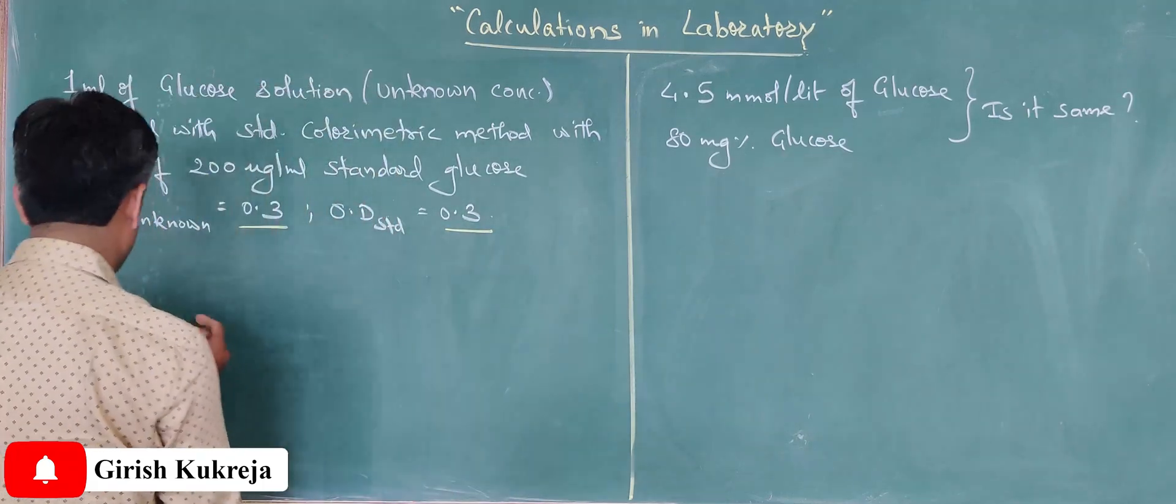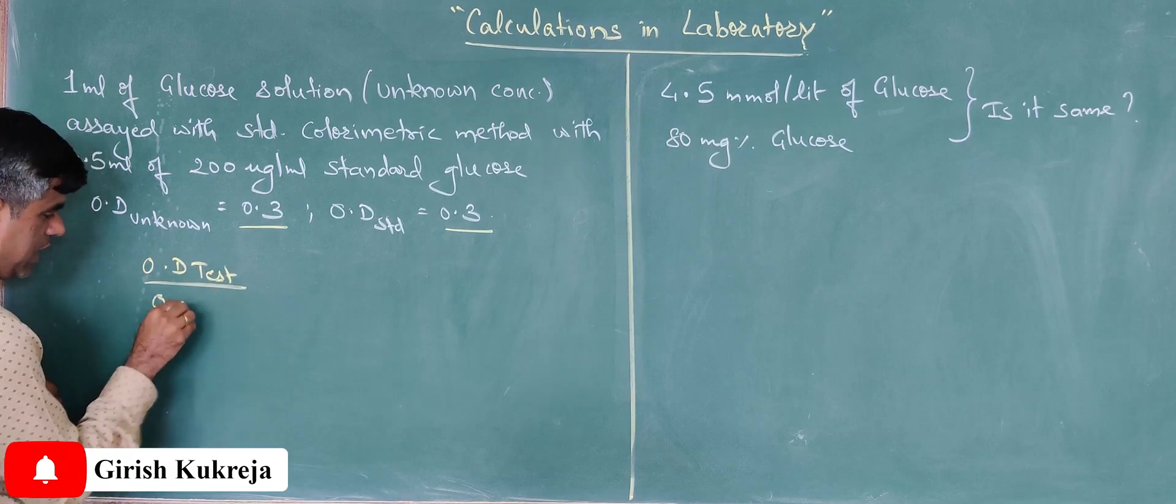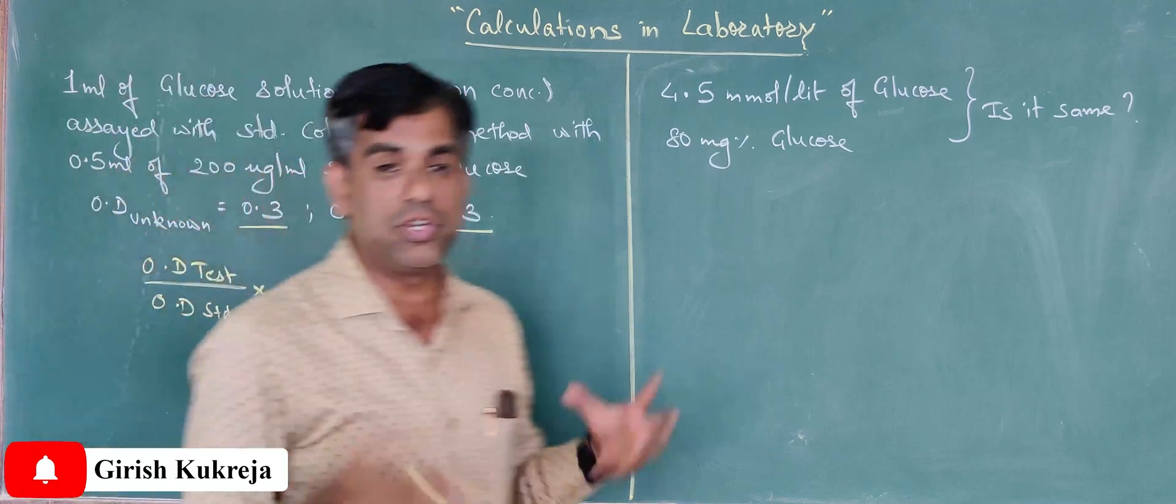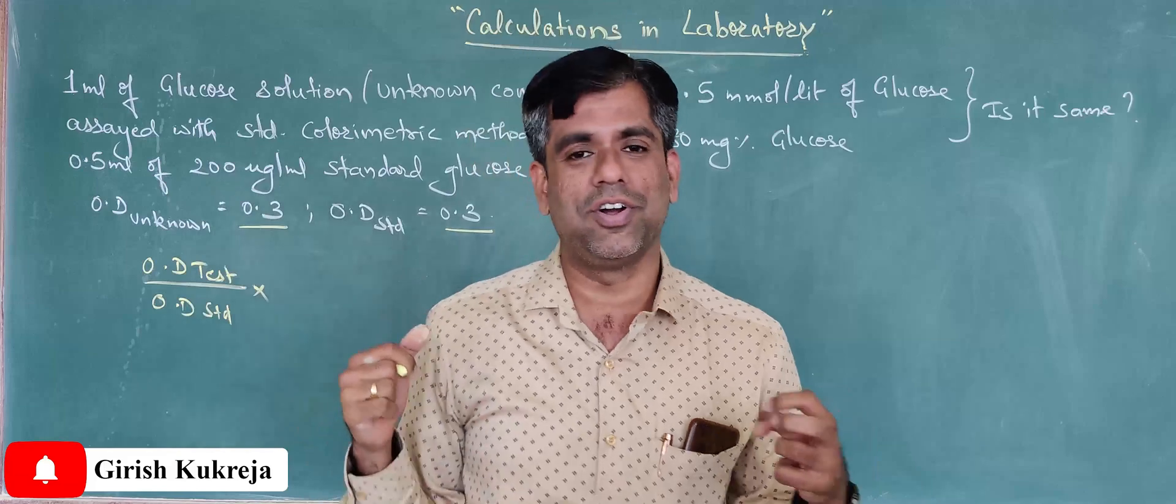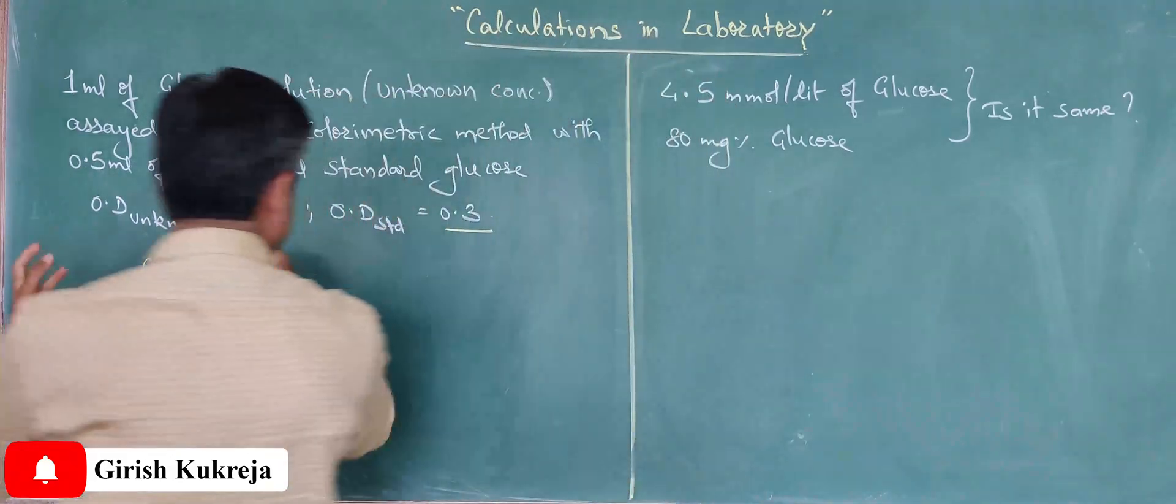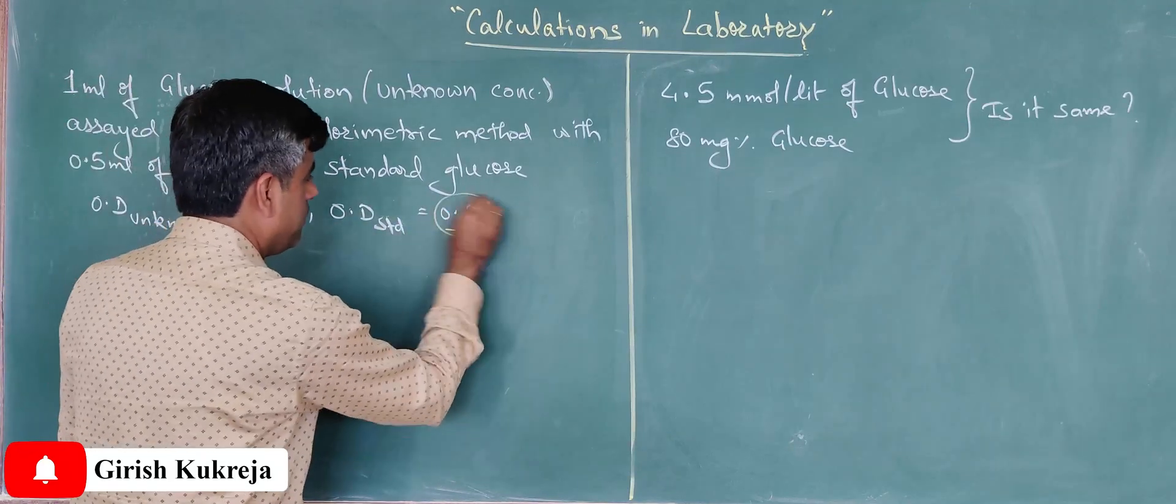Simple thing: what we know is your OD of your test upon OD of your standard into the amount. Now this actually goes with the amount, and this multiplicand is the amount, not what you call the concentration—it deals with the amount.